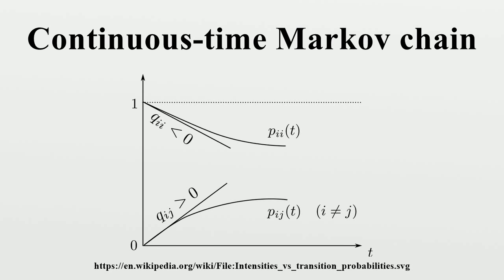Jump chain — Holding time definition. Define a discrete-time Markov chain Y to describe the nth jump of the process, and variables S1, S2, S3 to describe holding times in each of the states, where each S_n follows the exponential distribution with rate parameter minus Q_{Y_n, Y_n}.